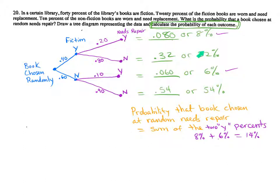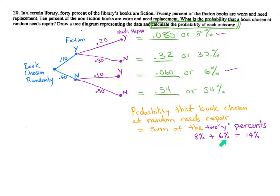So those are all the individual percentages for each outcome. Going back to the question — what is the probability that a book chosen at random needs repair? We look at all the outcomes with a Y, meaning yes it needs repair. That would be 8% from the fiction-needs-repair branch, and 6% from the nonfiction-needs-repair branch. Adding those together: 8% plus 6% equals 14%. The probability that a randomly chosen book needs repair is 14%.